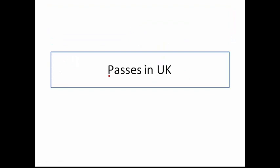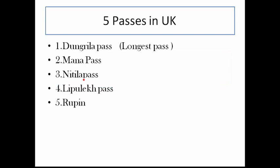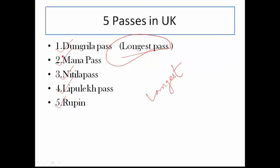Now we are going to see passes in Uttarakhand (UK). There are five important passes in UK: Dungrila pass, Mana pass, Nittila pass, Lipleic pass, and Rupin pass. Very important: Dungrila pass is the longest pass in India. In the exam they may ask which is the longest pass — the answer is Dungrila pass.